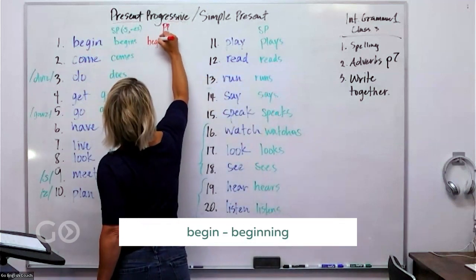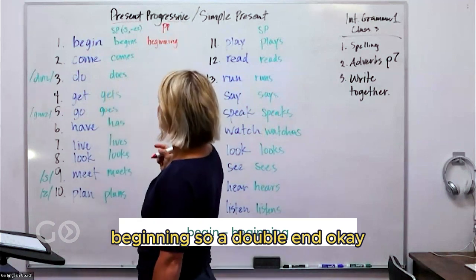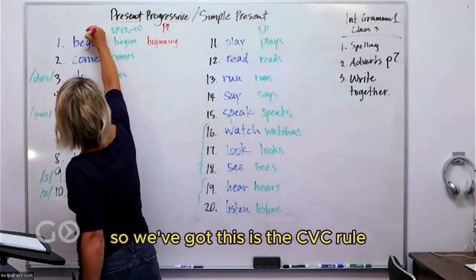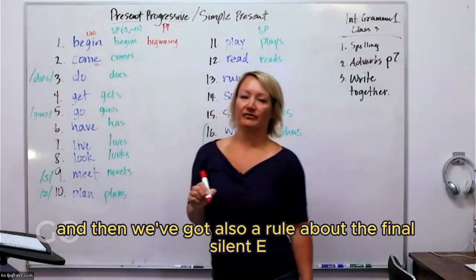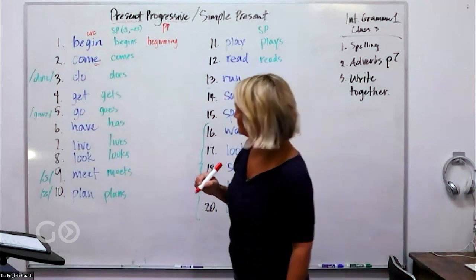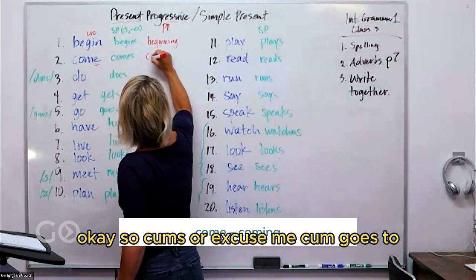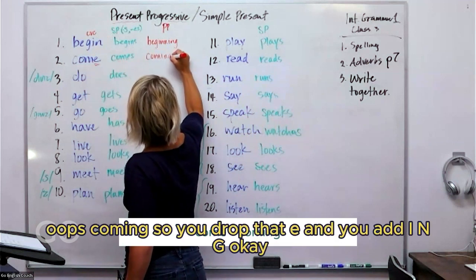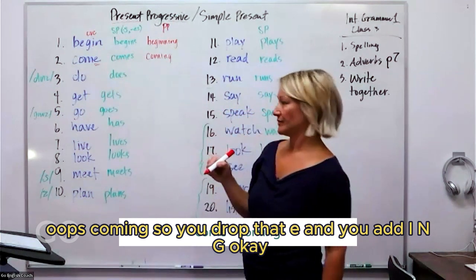Then when we have a word like begin, it has more than the consonant-vowel-consonant, but it ends with that pattern. So begin goes to beginning with a double N. And then there's another rule, so we've got this is the CVC rule. And then we've got also a rule about the final silent E. So come goes to coming. You drop that E and you add ING.